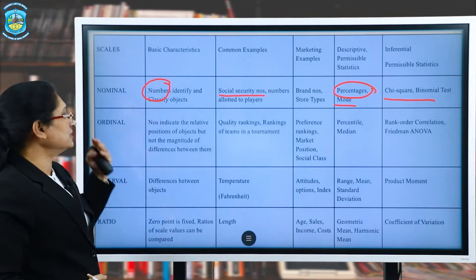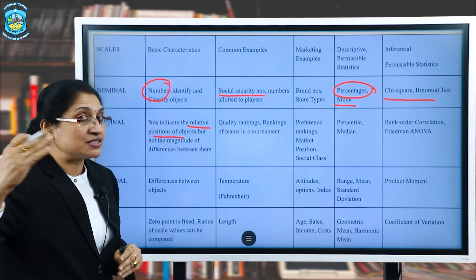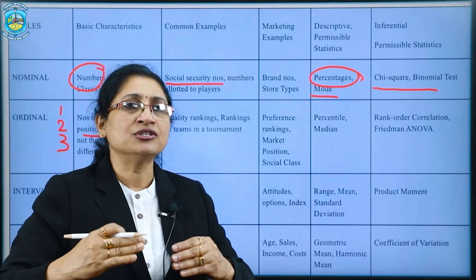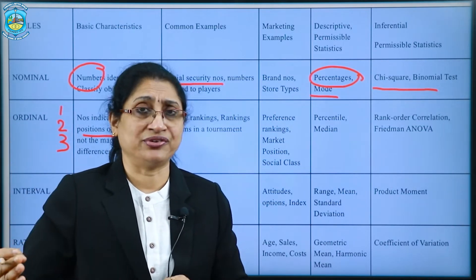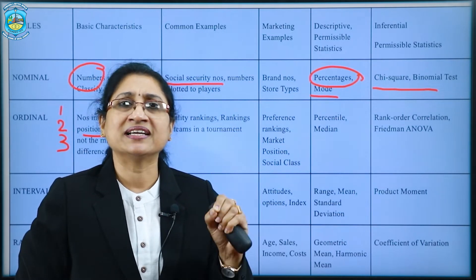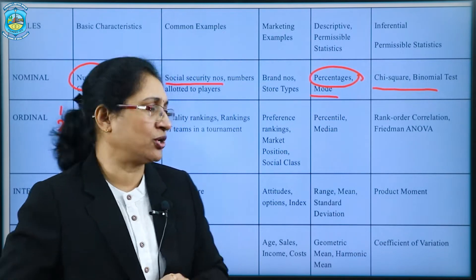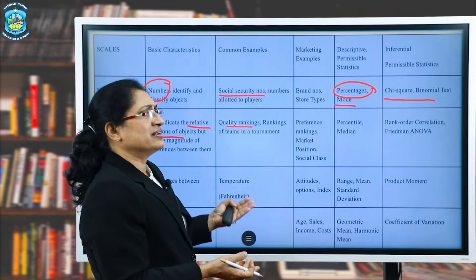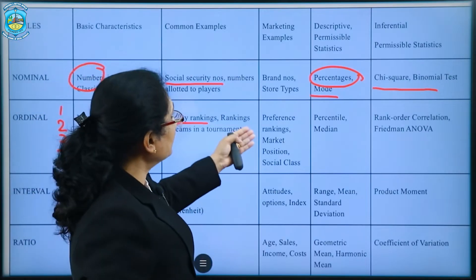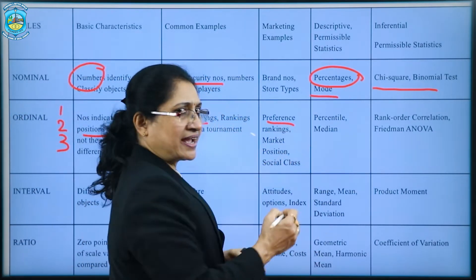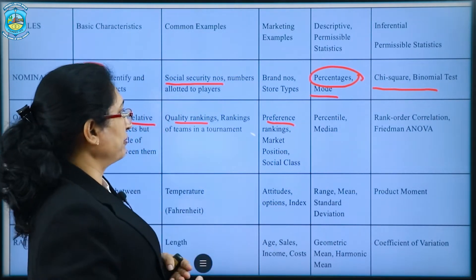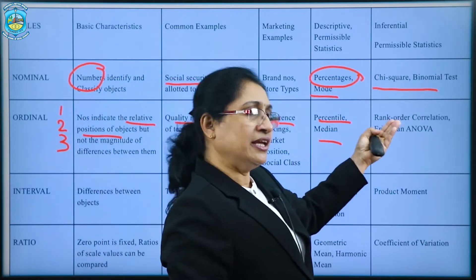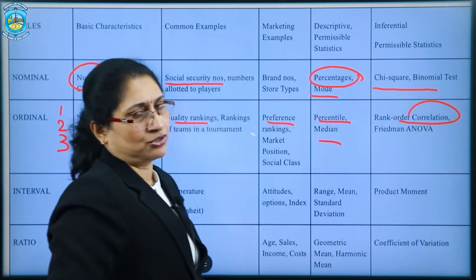For the ordinal scale, related positions are assigned — rank one, rank two, rank three. For example, arranging students by height in increasing or decreasing order: position one indicates the tallest or shortest person. Common examples include quality rankings or team rankings. In marketing, we use preference rankings — preferring one product over another. Descriptive statistics used are the percentile and median; for inferential statistics, we use rank order correlation or ANOVA.